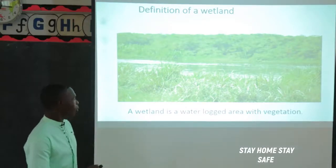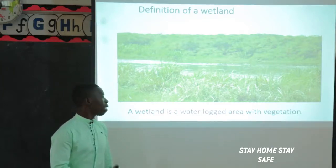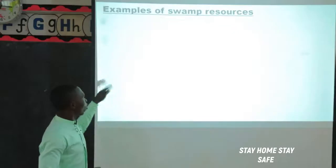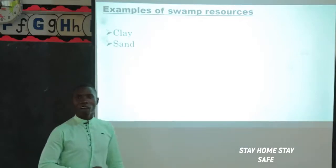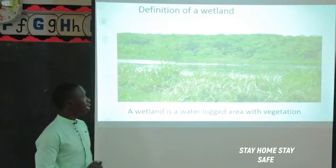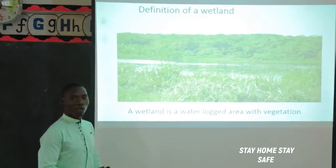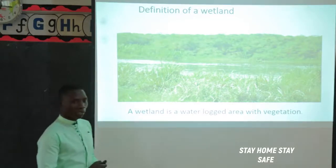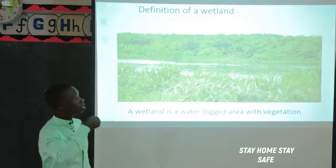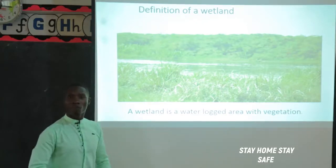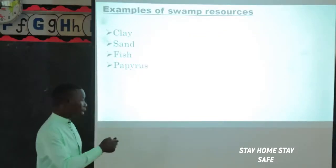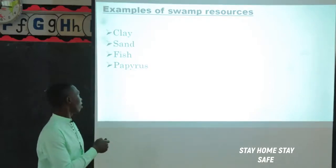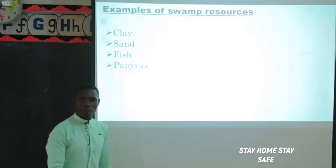After knowing the meaning of a swamp as a waterlogged area with vegetation, we can now go ahead to see what we call resources found in swamps - the things we can get from swamps and use to meet our needs. One thing we can get from swamps is Papyrus reeds. Let's spell the word together: P-A-P-Y-R-U-S. Papyrus.